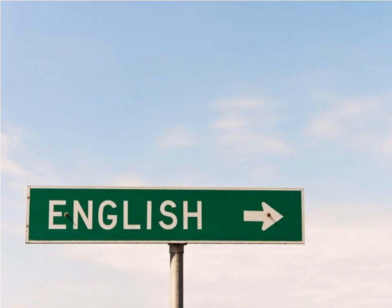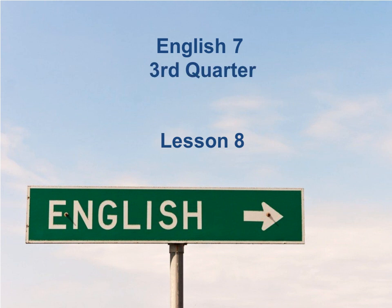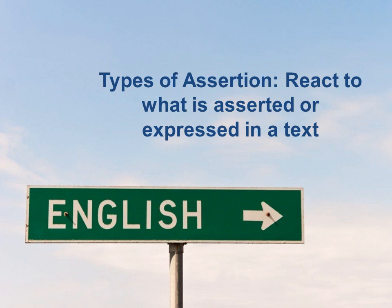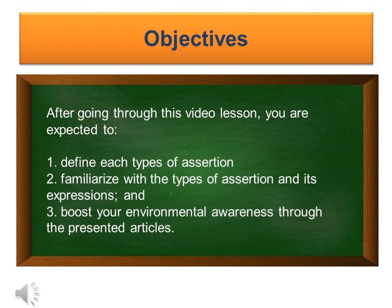Hello, how are you today? You are going to study English 7, Lesson Number 8, Third Quarter: Types of Assertion — React to What Is Asserted or Expressed in a Text. After going through this video lesson, you are expected to define each type of assertion, familiarize yourself with the types of assertion and its expressions, and boost your environmental awareness through the presented articles.